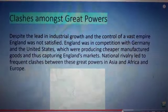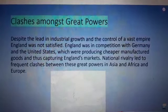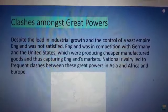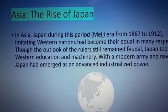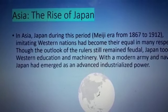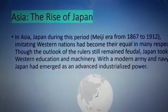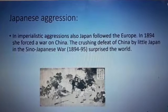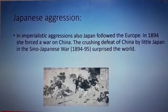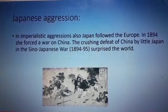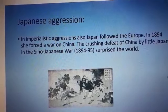Clashes amongst great powers. Germany and the US were manufacturing cheaper goods than England and captured England's market. This led to frequent clashes between them in Asia and Africa. Japan was influenced by Western education and missionaries. With a modern army and navy, Japan had emerged as an advanced industrial power. In 1894, Japan forced a war on China. In the Sino-Japanese War, China was defeated — it was a great surprise to all the world countries.